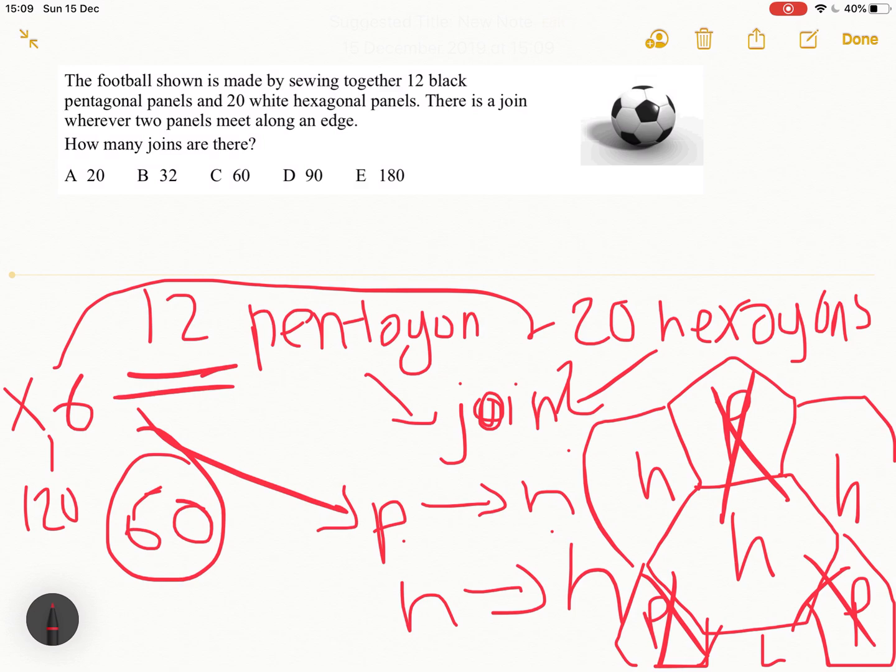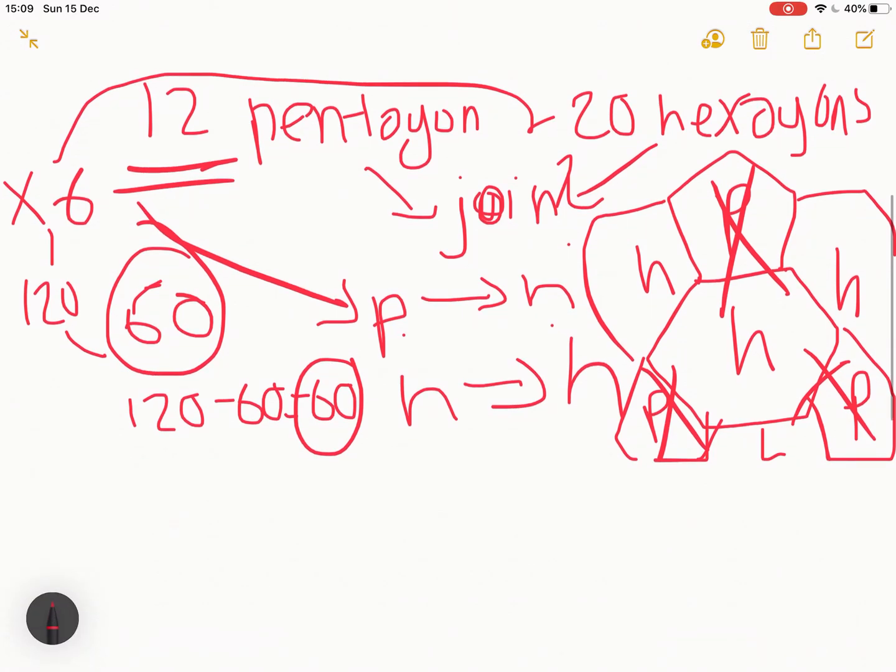However, we took out all the pentagon joins, so really what is left is 120 minus 60, which is 60. So 60 are the joins there are between all these hexagons.